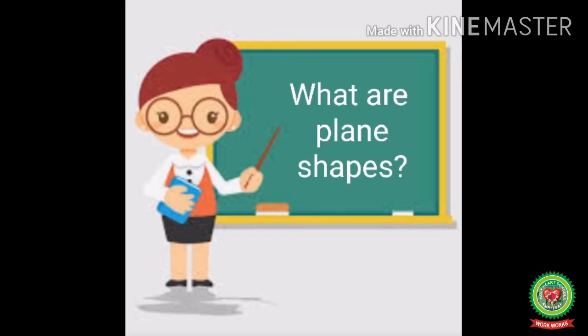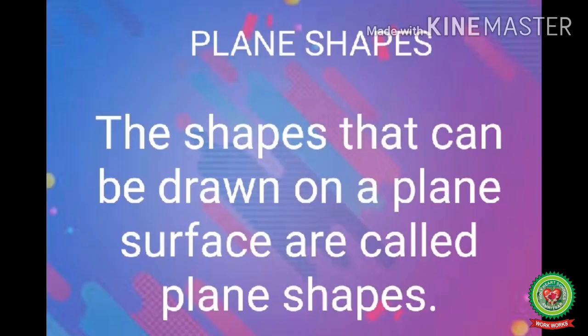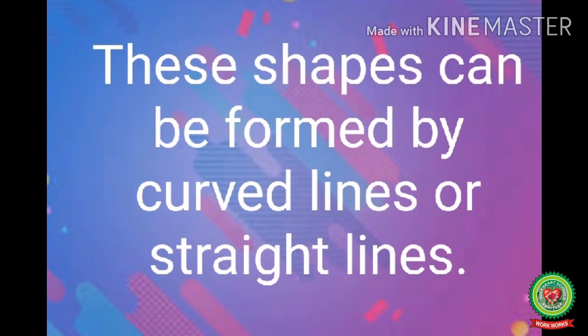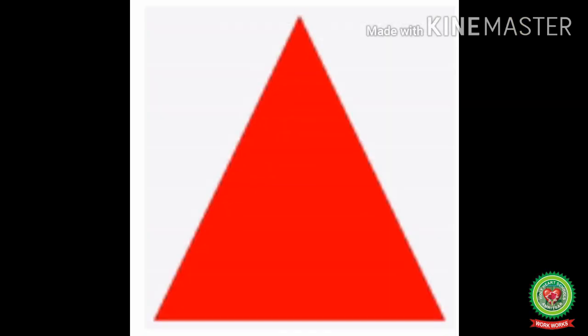But before that, let's revise plane shapes again. The shapes that can be drawn on a plane surface are called plane shapes. These shapes can be formed by curved lines or straight lines. Circle, triangle, rectangle, and square are its examples.